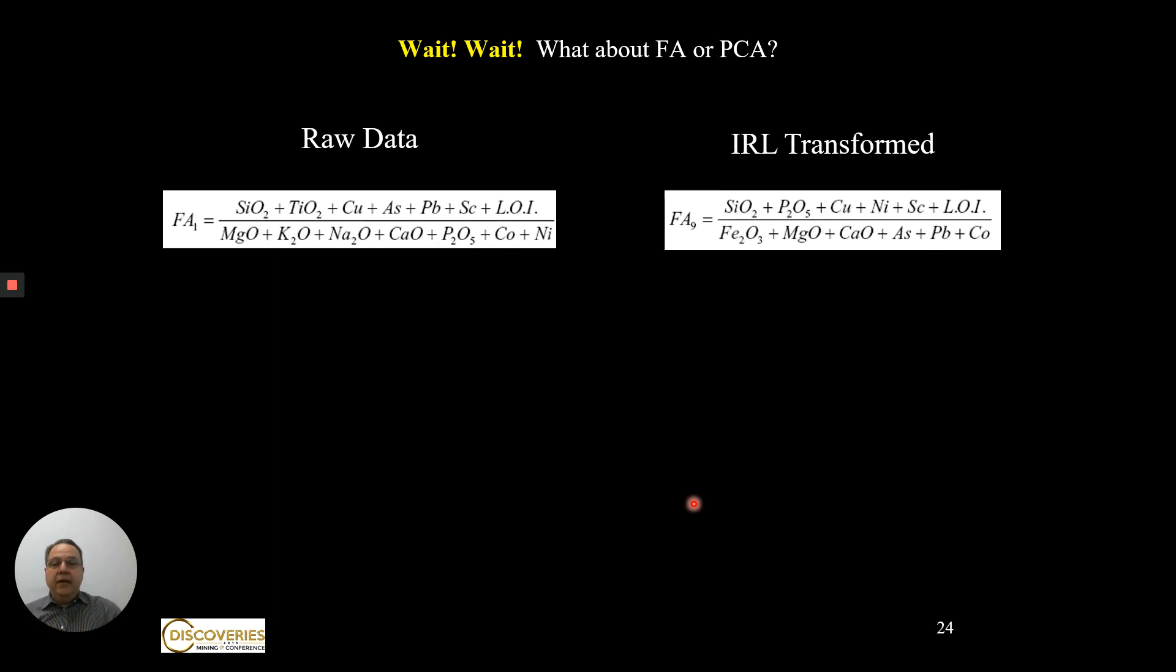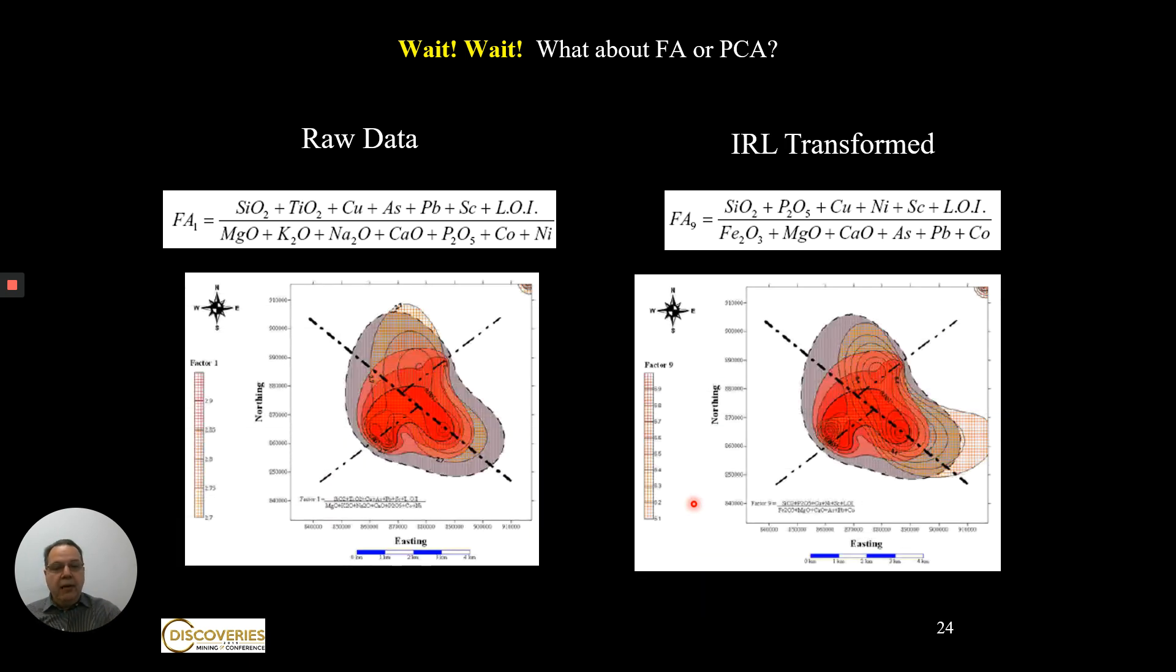Now wait a second, there are other statistical methods like factor analysis or principal component analysis. I applied factor analysis to the raw data and to the ILR transformed data. As you can see, factor analysis works very well too, but the problem with factor analysis is that you need to know what each factor represents, so it requires a much better understanding of the geology.